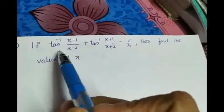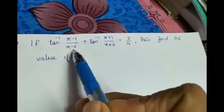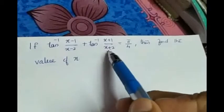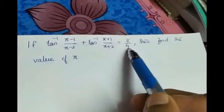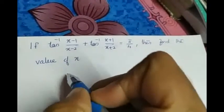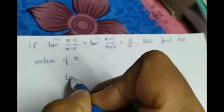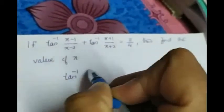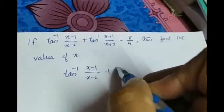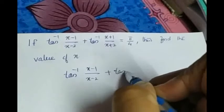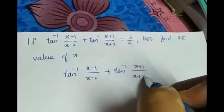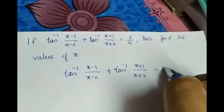The problem is: if tan inverse of (x minus 1) by (x minus 2) plus tan inverse of (x plus 1) by (x plus 2) is equal to pi by 4, then find the value of x. We take this as the given equation.